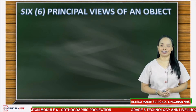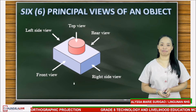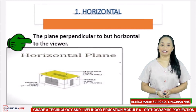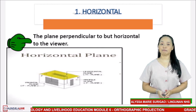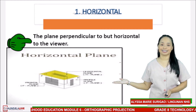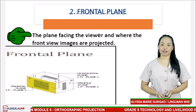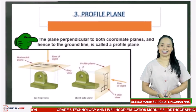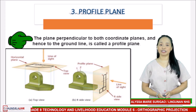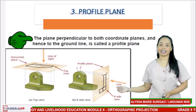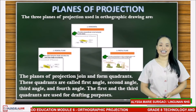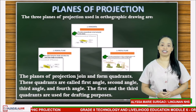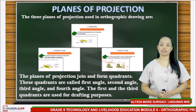Planes of projection: The three planes used in orthographic drawing are: the horizontal plane — perpendicular to but horizontal to the viewer; the frontal plane — facing the viewer, where front view images are projected; and the profile plane — perpendicular to both coordinate planes and hence to the ground line. The planes of projection join and form quadrants: first angle, second angle, third angle, and fourth angle. The first and third quadrants are used for drafting purposes.